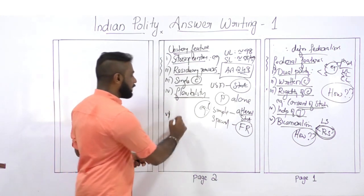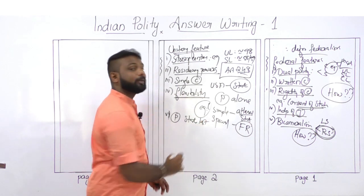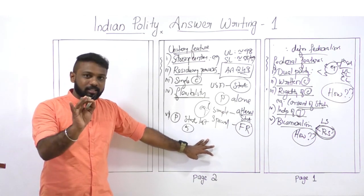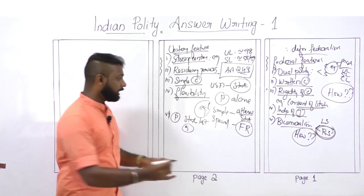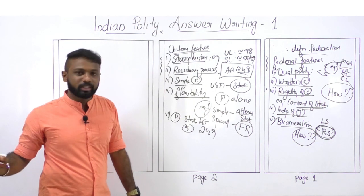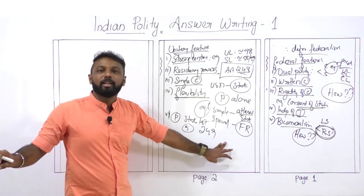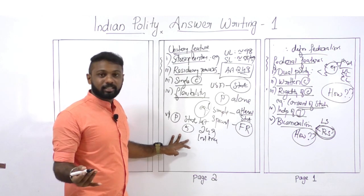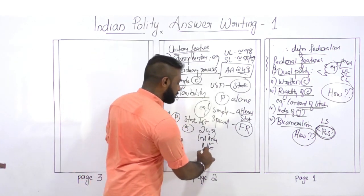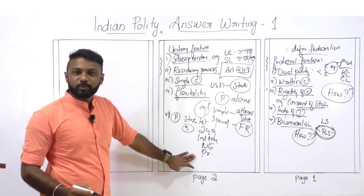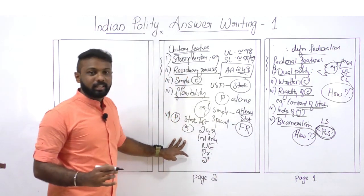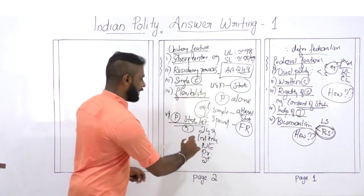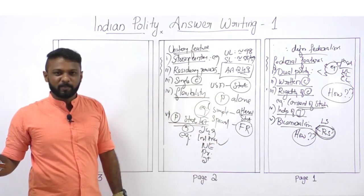In some extraordinary circumstances, Parliament has authority over the State List. Usually states make laws on the State List, but under five circumstances Parliament can do so: when Rajya Sabha passes a resolution under Article 249; to implement international treaties; when national emergency is in operation; when President's Rule is in operation; or when two or more states make a request. These show Parliament's expanded power, justifying answers with article references.